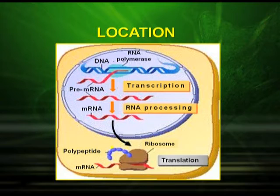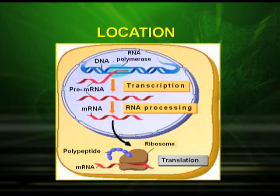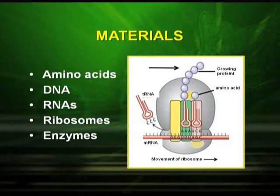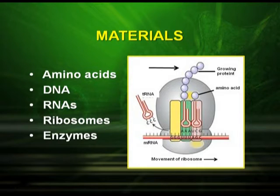Before going into the detail of translation, let us see where it takes place. Transcription takes place inside the nucleus, RNA processing takes place, and then protein formation — the translation process — takes place in the cytoplasm. That means the mRNA is transferred from the nucleus to the cytoplasm. Materials required for translation are: amino acids, which are the building blocks of protein; DNA; RNAs; ribosomes; and various enzymes. The ribosome has a small subunit and large subunit, and the mRNA on which protein synthesis takes place.